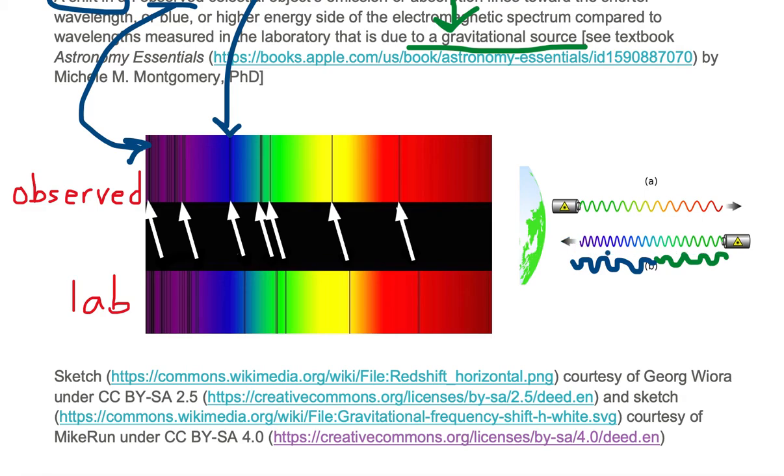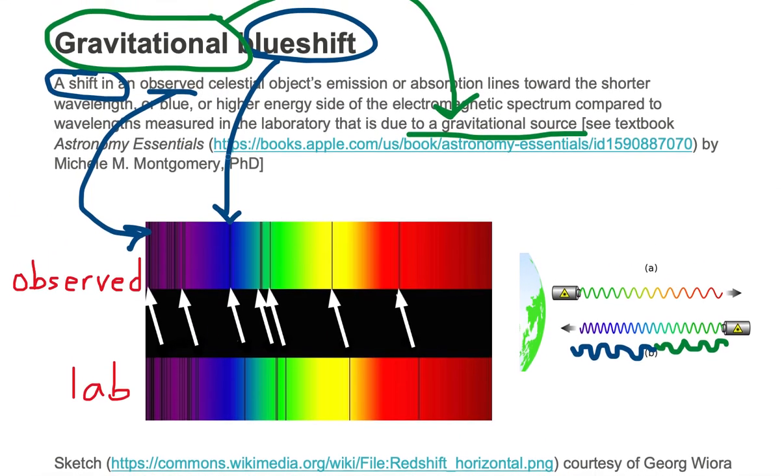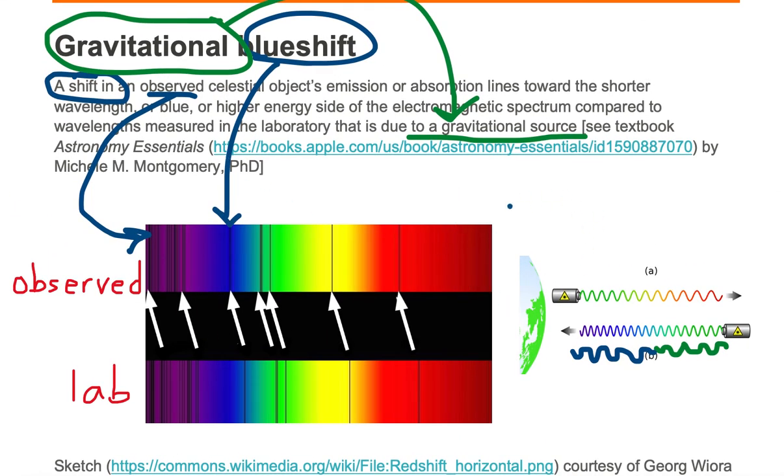This shift to blue or the violet side is called a blueshift, and the source is due to gravity from planet Earth.